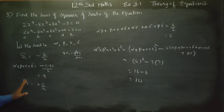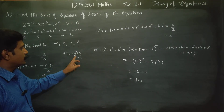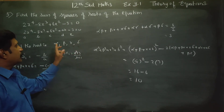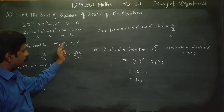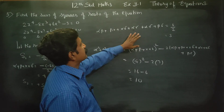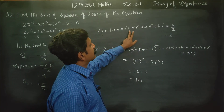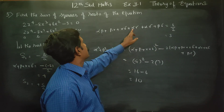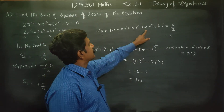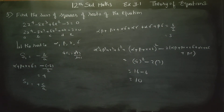To recap: S1 is 1 root at a time, S2 is 2 roots at a time. The sum of squares formula is a square plus b square plus c square plus d square equals a plus b plus c plus d whole square minus two times the sum of products two at a time. Applying this gives the answer 10. Thank you.